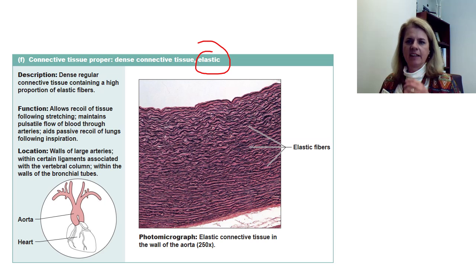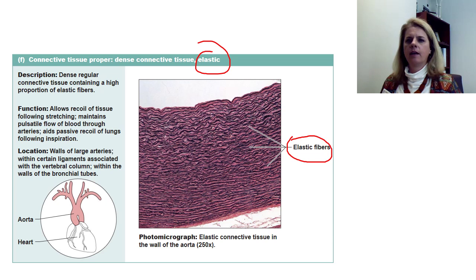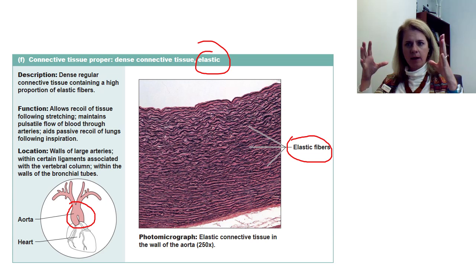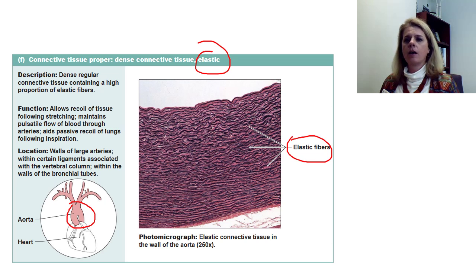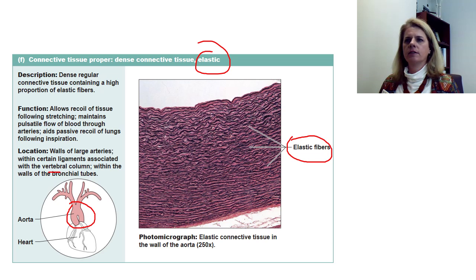Last is dense elastic connective tissue, which has lots of elastic fibers and not as much collagen, allowing for recoil — these tissues can stretch and then return to their original shape. You see this in your large arteries, because every time your heart pumps it pushes blood in, causing expansion and then collapse. You'd also find it in the ligaments of your vertebral column — you can bend over and come back — and in your bronchial tubes, which expand and recoil as you breathe.